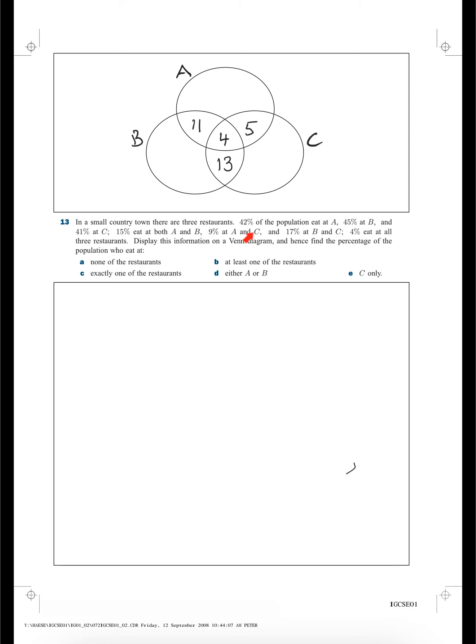We've got some good information down there already. Now, it says 42% of the population eat at A. Well, that whole circle has to be 42. So let's add up what we have. We've got 11 and 4 and 5. That's 20. And so that's going to be 22.